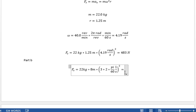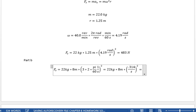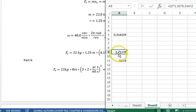So this is 22 kilograms times 8 meters times 0.314 per second squared equals, and at the end of the day, we get 2.7 newtons.